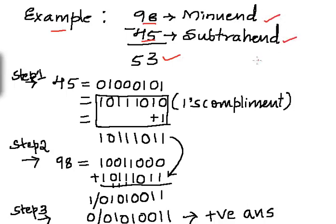We have to follow three steps. In step 1, we have to find the two's complement of the subtrahend — the number being subtracted, which is 45. Its equivalent binary number in 4 bits: 4 stands for 0100 and 5 stands for 0101. To make the two's complement of 45, first we make the one's complement, then we add 1 to it.